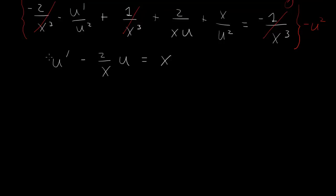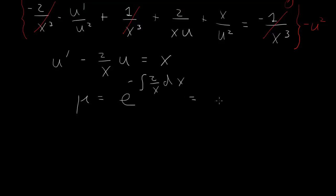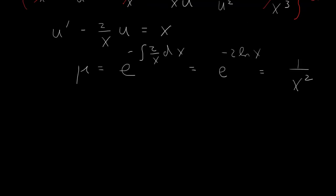A first-order linear equation in u, which we can solve using an integrating factor. Our integrating factor is e to the integral of minus 2 over x dx. This is e to the minus 2 log x, which equals x to the minus 2. So the integrating factor is 1 over x squared.